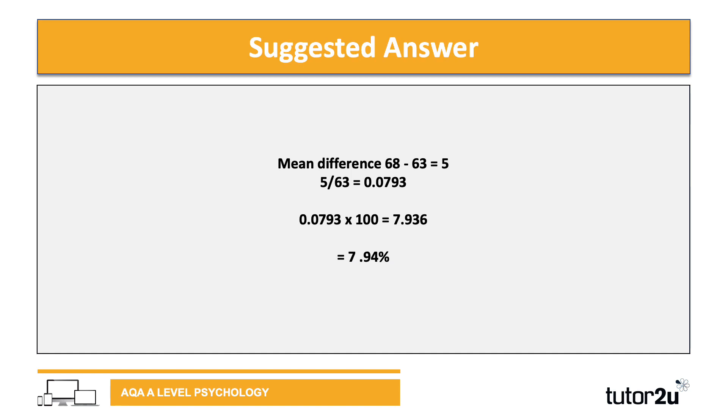We need to work out the mean difference first. Subtract 63 from 68, which equals 5. Then divide 5 by 63 to get 0.0793. Multiply by 100 for a percentage: 7.936. Don't forget it's asking for three significant figures, so the answer is 7.94%. It's really important to show your workings. Even if you get the wrong answer, if part of your workings are correct, you can still pick up marks. Make sure you show your full workings in the exam.